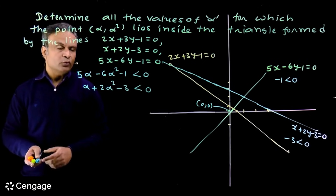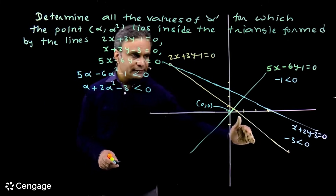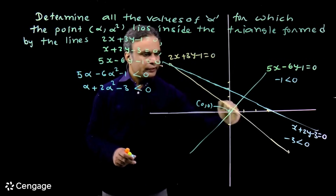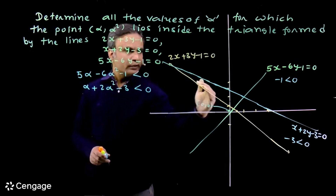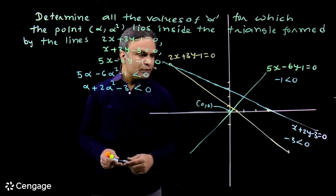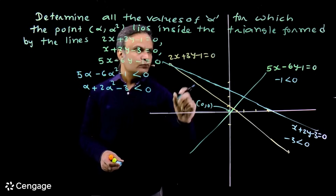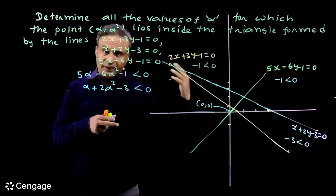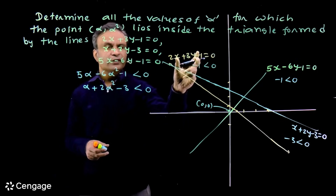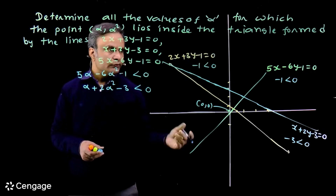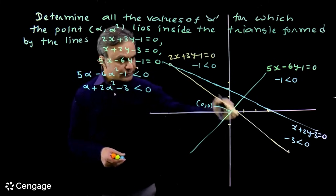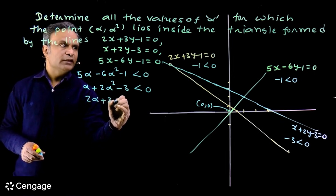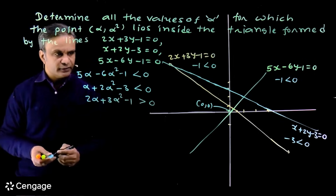We must impose one more condition with respect to the third straight line, 2x plus 3y minus 1 equals 0. The origin and the interior point lie on opposite sides of this line. With respect to the origin, the sign of this expression is negative, so with respect to this point the sign must be positive. Therefore we have: 2α plus 3α² minus 1 greater than 0.